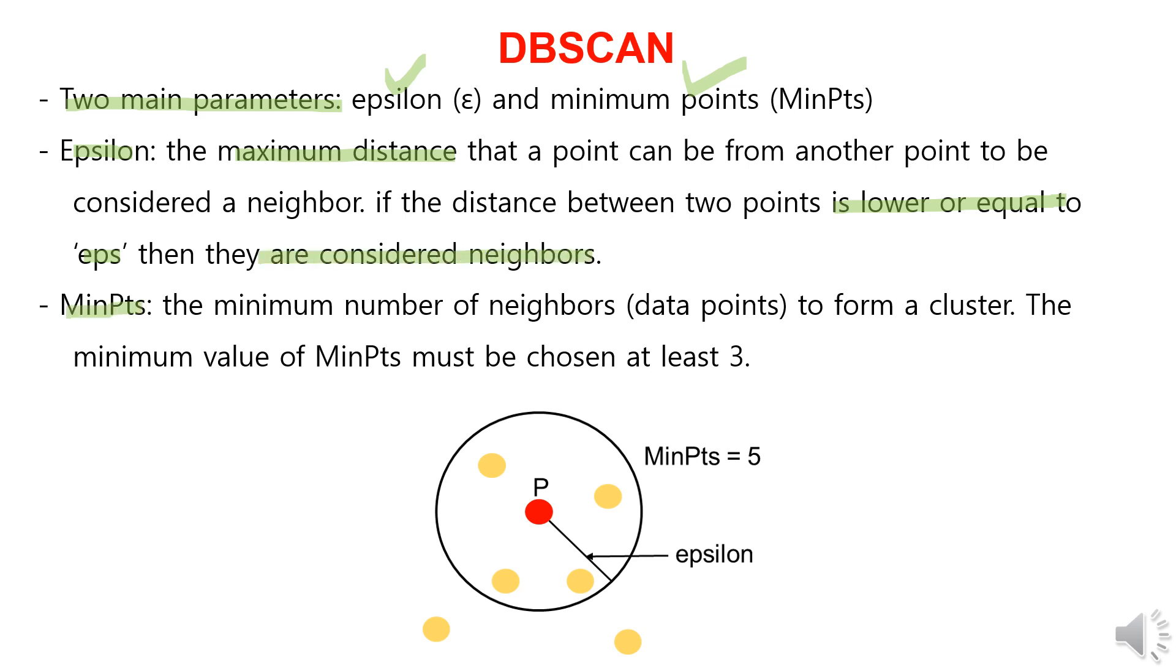Minimum points represent the minimum number of points required to form a cluster, and it should be chosen at least three. For example, if minimum points is set to five, considering the red point P as the center and a circle with a radius of epsilon, if there are five or more points within that circle, it is considered as one cluster. In the image below, you can see that within the epsilon radius, including the red point, there are five points forming a cluster.